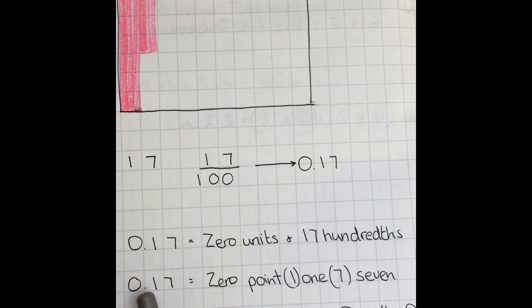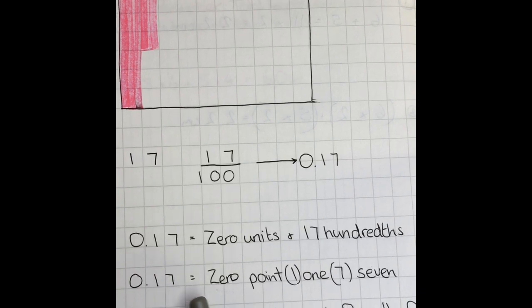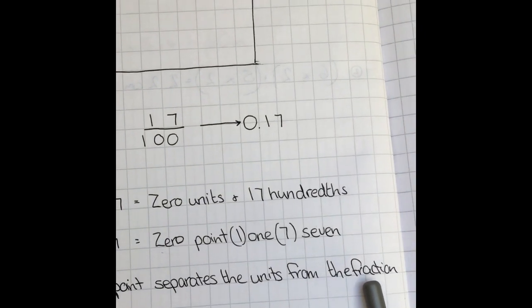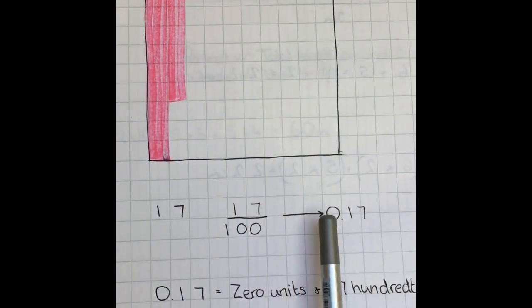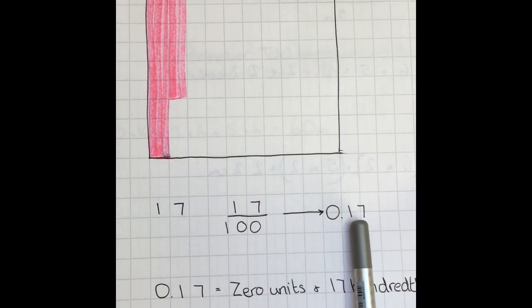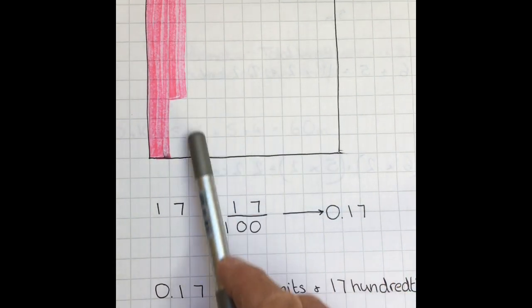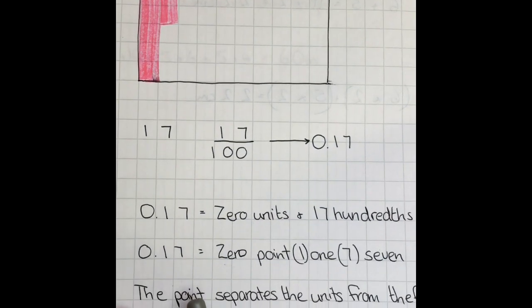Another way of saying what's written down here is 0.17, so that's zero point seventeen. You can also say it like that. The point, what it does, is it separates the units from the fraction. The units are the whole things, which means the whole square, and we have none of those colored in. This is the fraction part, the way that one thing is split into a hundred parts. We only have seventeen of them colored in. So the decimal point separates the units from the fraction.